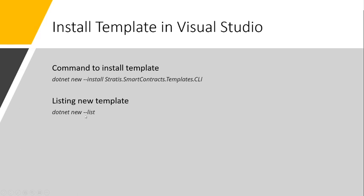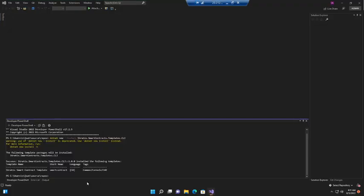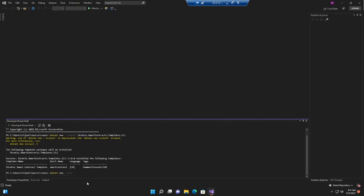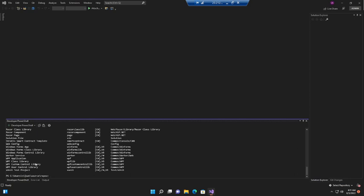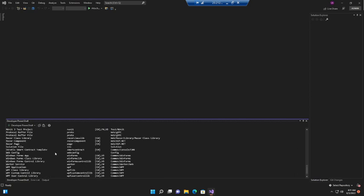Once installed, we can check whether the template is installed or not using the command dotnet new --list. This command lists the newly installed templates in Visual Studio. So let me run dotnet new --list. Here we can see the Stratis smart contract template — it is installed in Visual Studio.